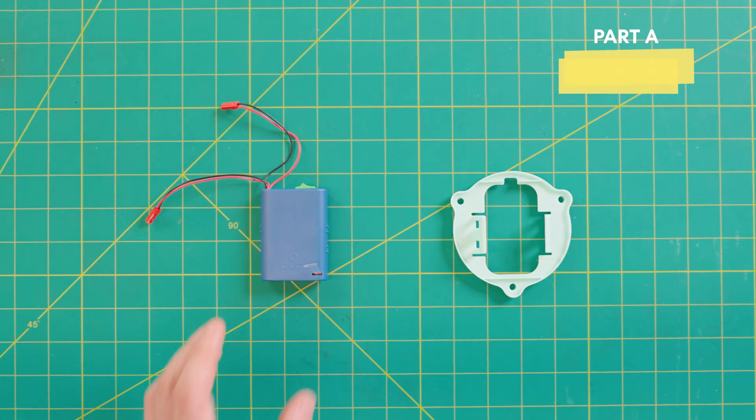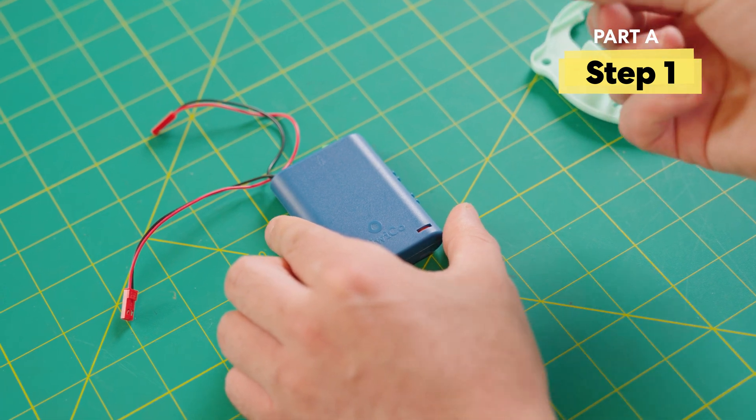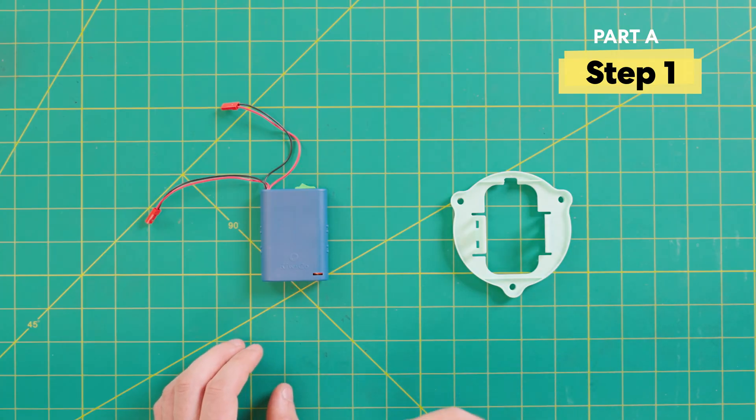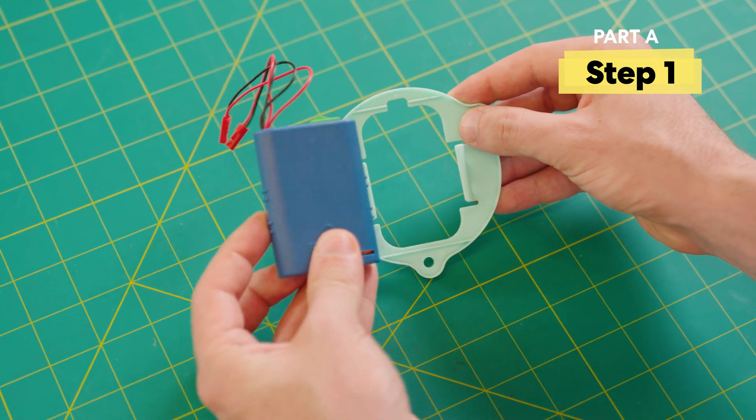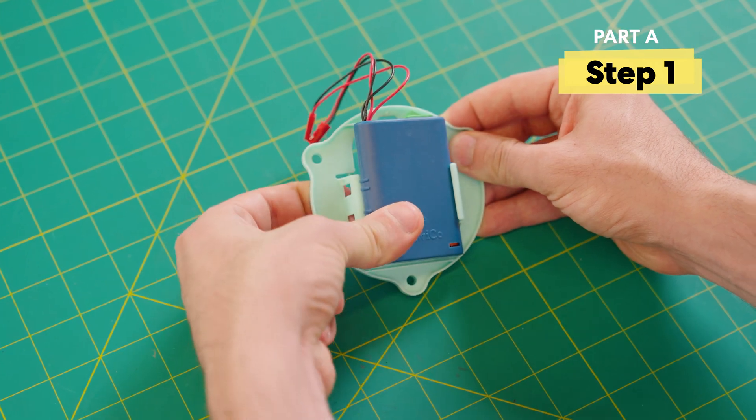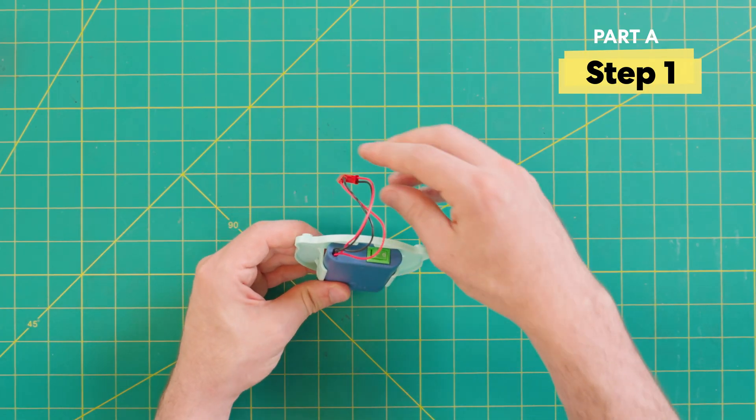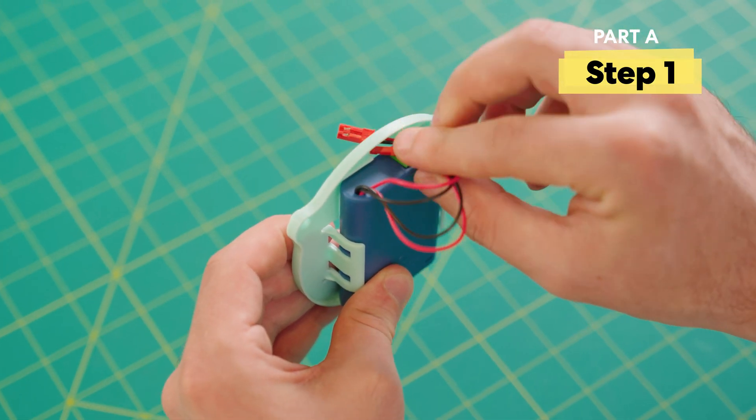First, we're going to grab our battery pack and remove this tab. This tab is in there so that it doesn't drain battery while the crate is on the way to you, and you don't really need it anymore because you want the electricity to start flowing. And now we're going to snap this battery into place. We're going to move one side in and then kind of have the second part snap in like that, and then we're going to take these two wires and feed them through this hole.